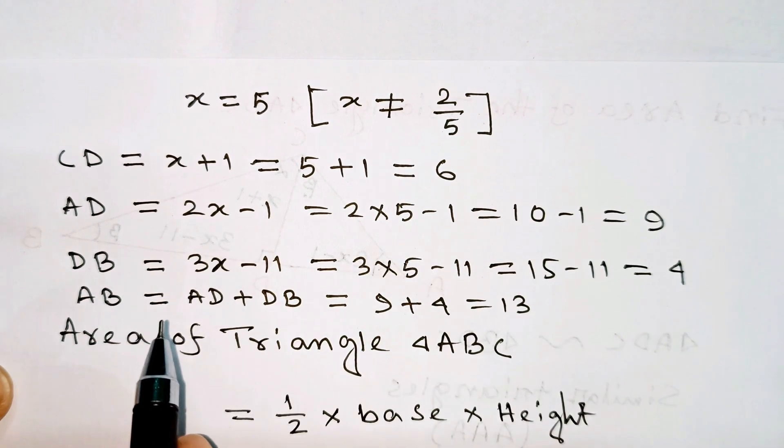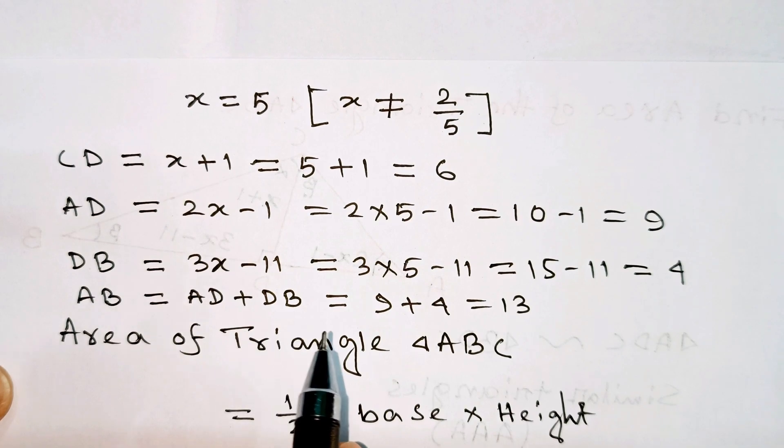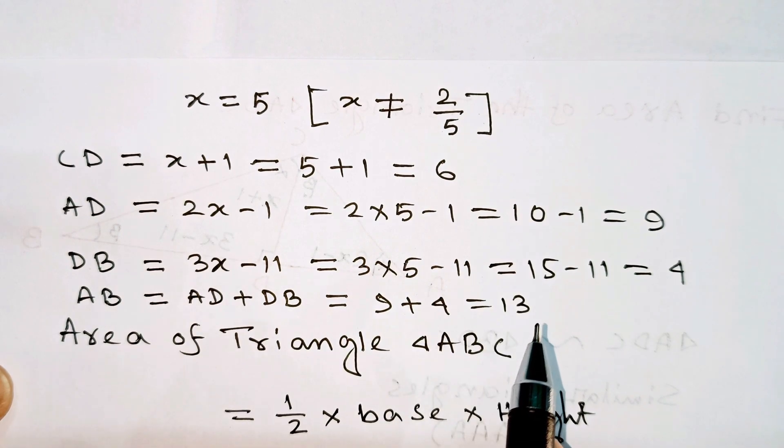AB equals AD plus DB, which equals 9 plus 4 equals 13.